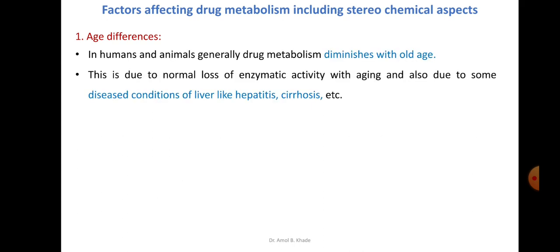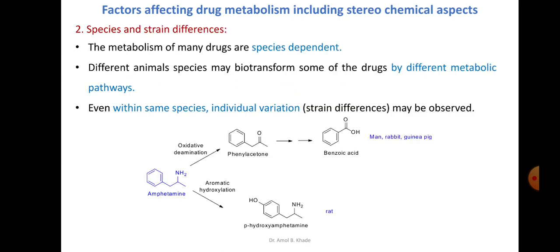In humans and animals, drug metabolism generally diminishes with old age. As the body gets older, its capability to synthesize microsomal enzymes gets reduced. Sometimes the body suffers from diseases like hepatitis or cirrhosis, and when the liver is affected, the enzymes present in the liver are also affected, ultimately making drug metabolism different in these patients compared to normal patients.